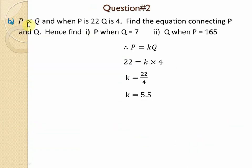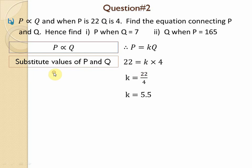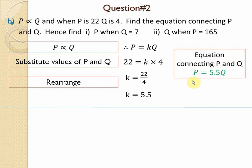Question number two: p is directly proportional to q. When p = 22 and q = 4, we use these two values to calculate k. Substituting the values of p and q, we get the value of k. Rearranging gives p = 5.5q.